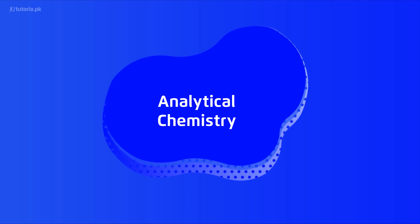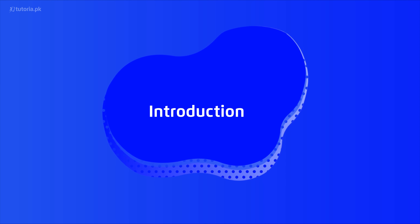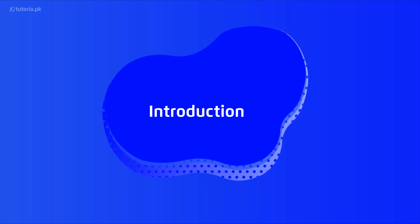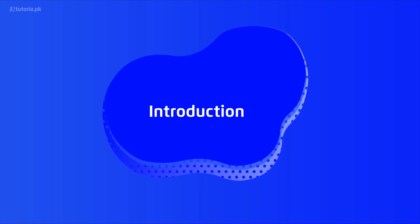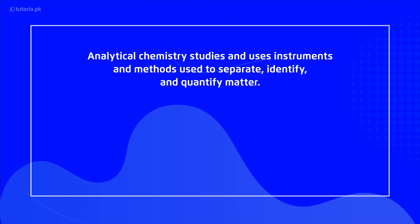Assalamu alaykum students, I am Ramshah Sahir, your on-screen chemistry instructor from tutorial.pk. Let's start the very last chapter of our book — analytical chemistry. We have explored different chemistry concepts in 11th grade, and now we are going to explore the very modern form of chemistry. Analytical chemistry studies and uses instruments and methods used to separate, identify, and quantify matter.